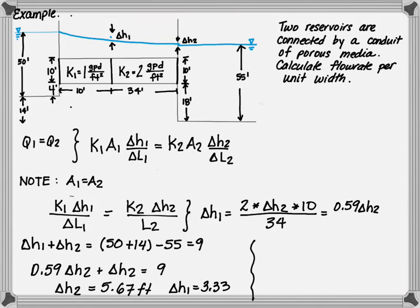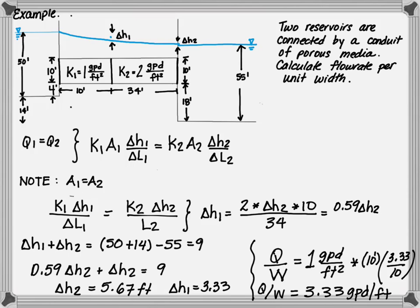Remember, this is per unit width since we don't know how wide the porous media is, but we do know it's 10 feet high. So Q divided by W equals the K value — in our case 1 gallon per day per foot squared — times our height of 10 feet, times our gradient of 3.33 divided by 10, which gives us 3.33 gallons per day per foot.